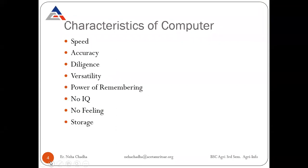The first characteristic of a computer is speed. A computer can work very fast — it takes only a few seconds for calculations that we might take hours to complete. You will be surprised to know that a computer can perform millions of instructions per second. The second characteristic is accuracy. The degree of accuracy of a computer is very high and every calculation is performed with the same accuracy, determined on the basis of the design of the computer.